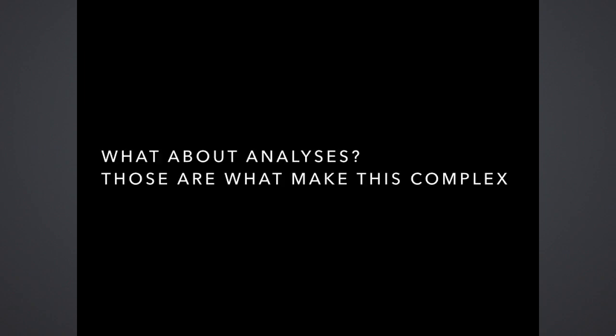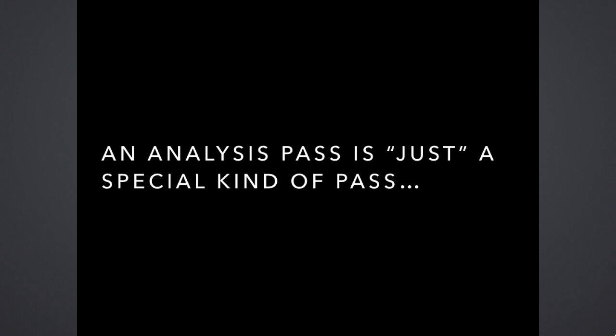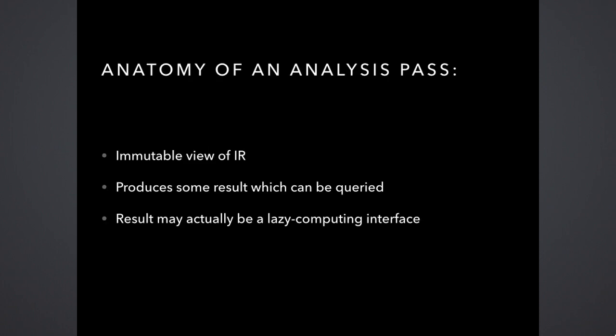Everything would be simple if all we did was transform IR, but analyzing the IR is really complicated — all the complexity comes from here. An analysis pass is, in theory, just a special kind of pass, but it has very special properties. It has an immutable view of the IR — it never mutates the IR. It produces a result that can be queried. In many cases we don't actually compute anything upfront — we give you a result that will lazily compute what you need when you need it. LLVM really likes to be lazy.